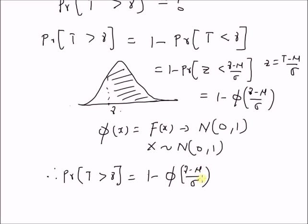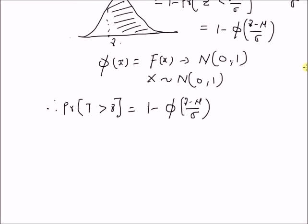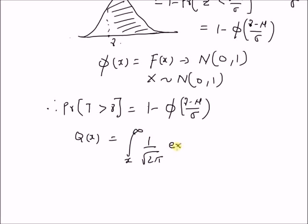The value of phi at any given location can be easily determined by using standard normal CDF tables. Another function commonly used for representing this probability is the Q function, where Q of x is equal to the integral from x to infinity of 1 over square root of 2 pi times exponential of minus t squared over 2, dt.